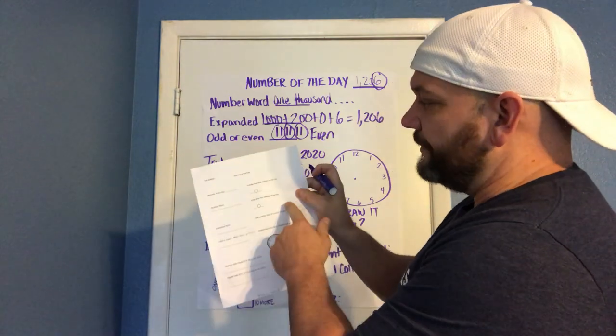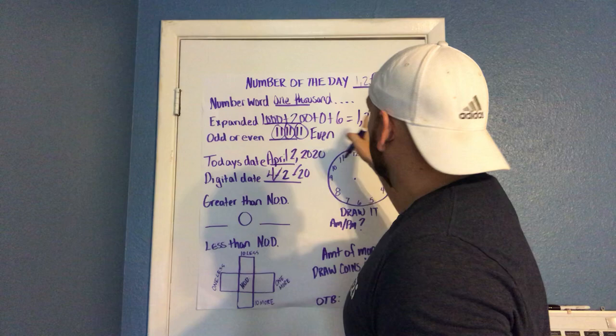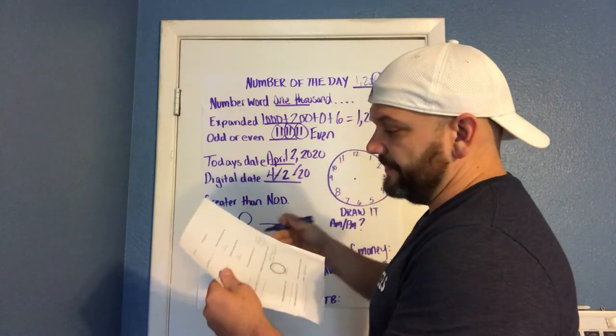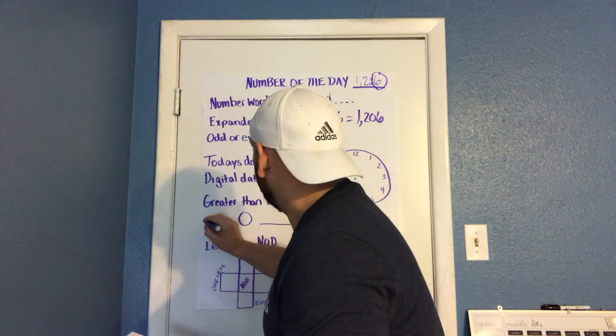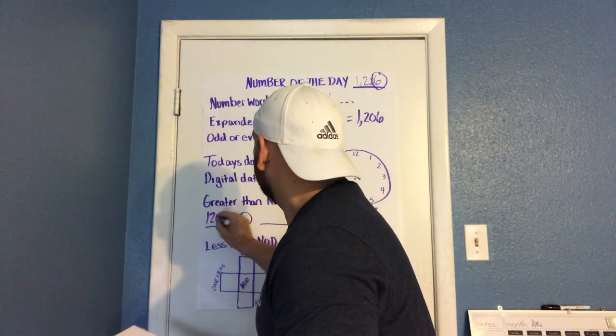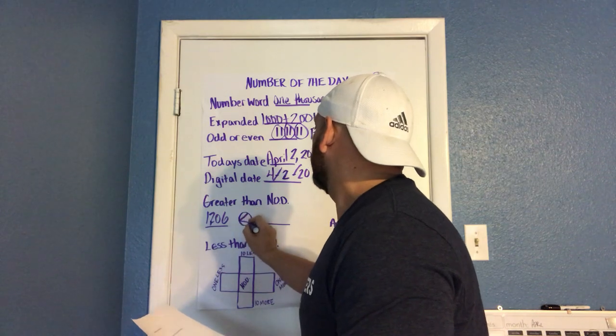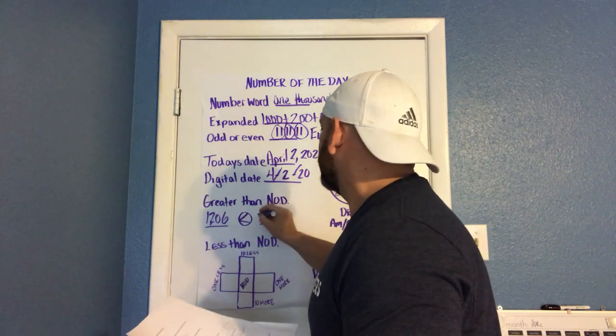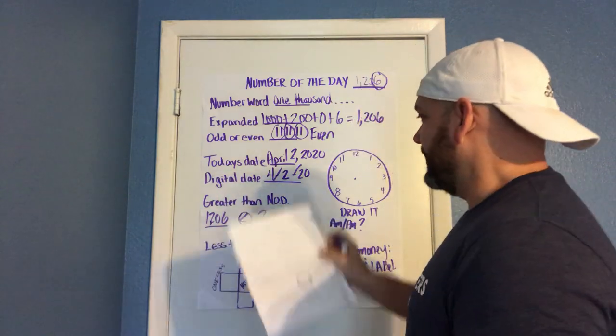Then on the sheet it says greater than the number of the day, so we're looking for a number that's obviously greater than, and then there's also one for less than, so they'll just fill that out. We start with 206, we need a number that would be greater than, so that would be something like 2,000 or something. Then they make another one for less than, but I don't have it up here.